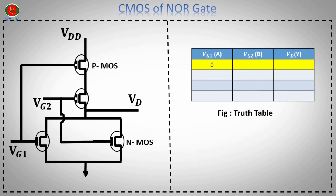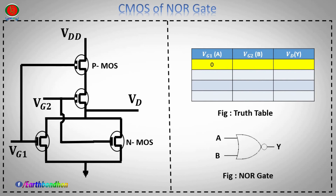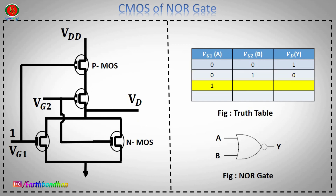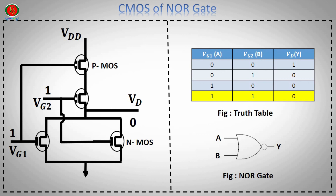NOR gate truth table: input VG1 = A0, input VG2 = A0, output VD = A1. Input VG1 = A0, input VG2 = A1, output VD = A0. Input VG1 = A1, input VG2 = A0, output VD = A0. Input VG1 = A1, input VG2 = A1, output VD = A0.